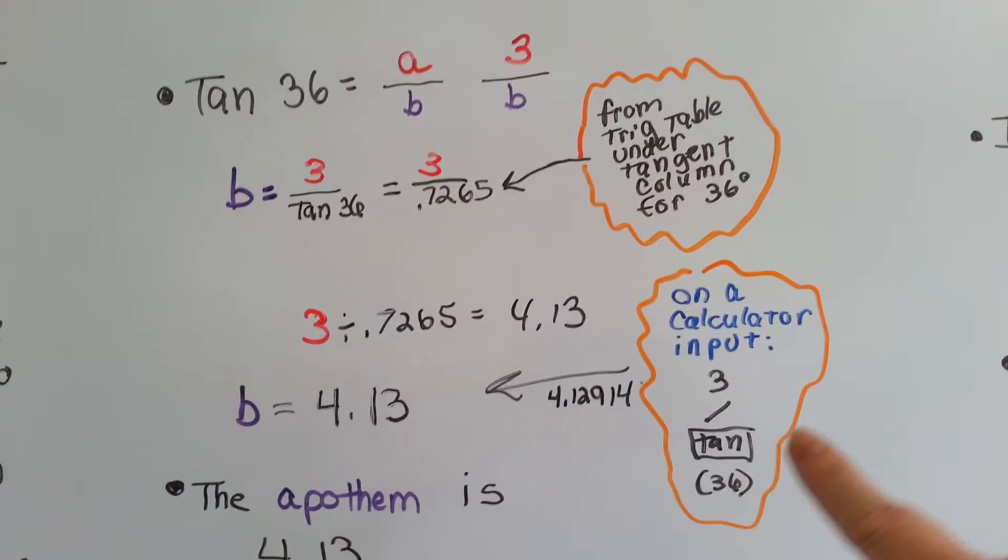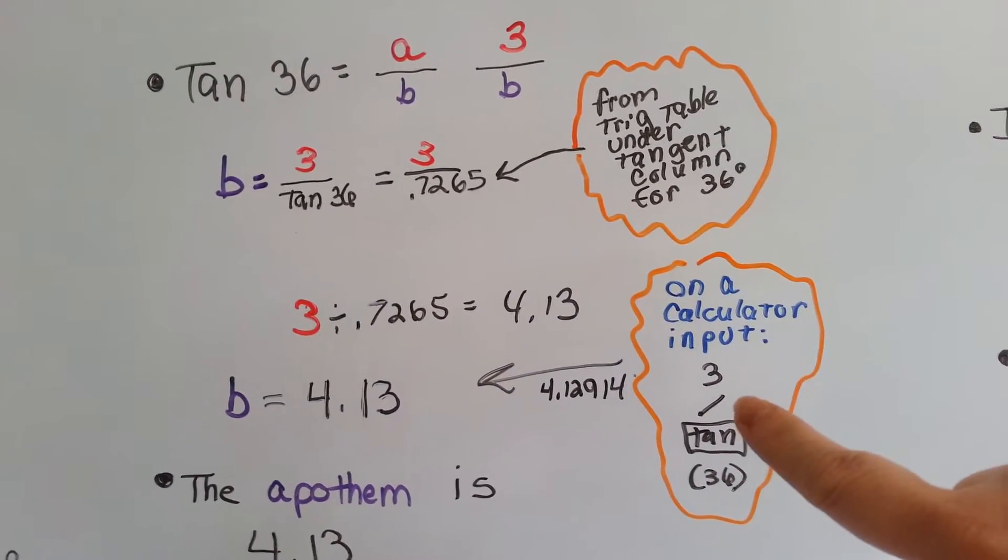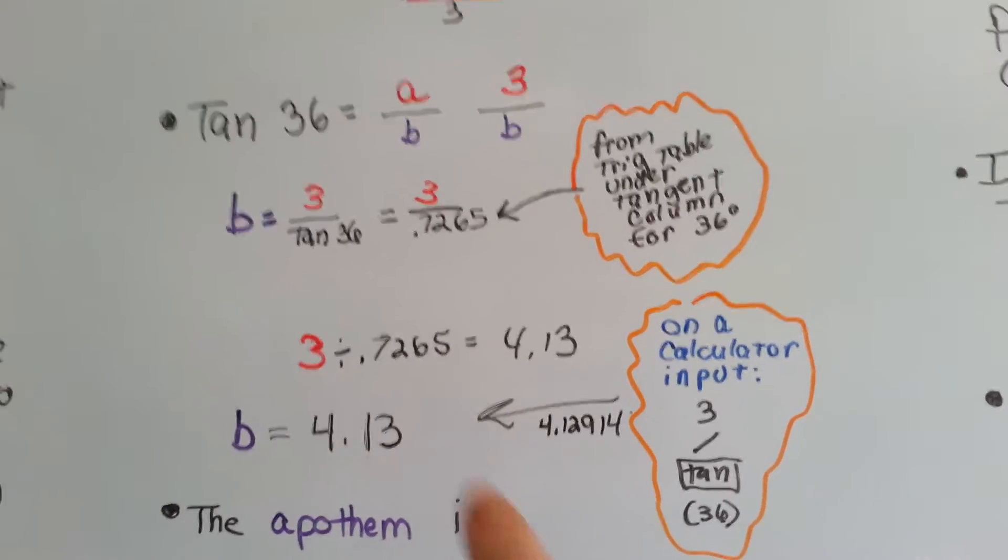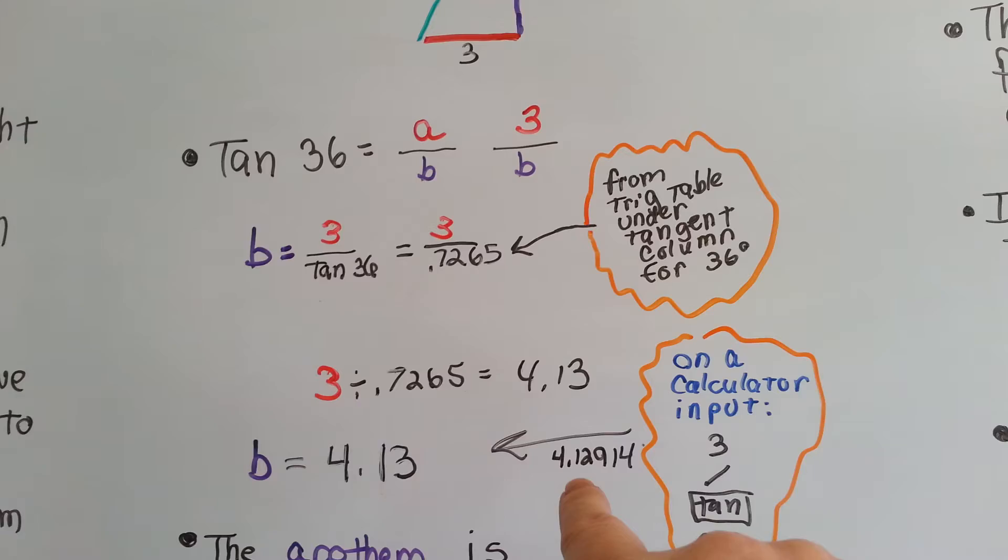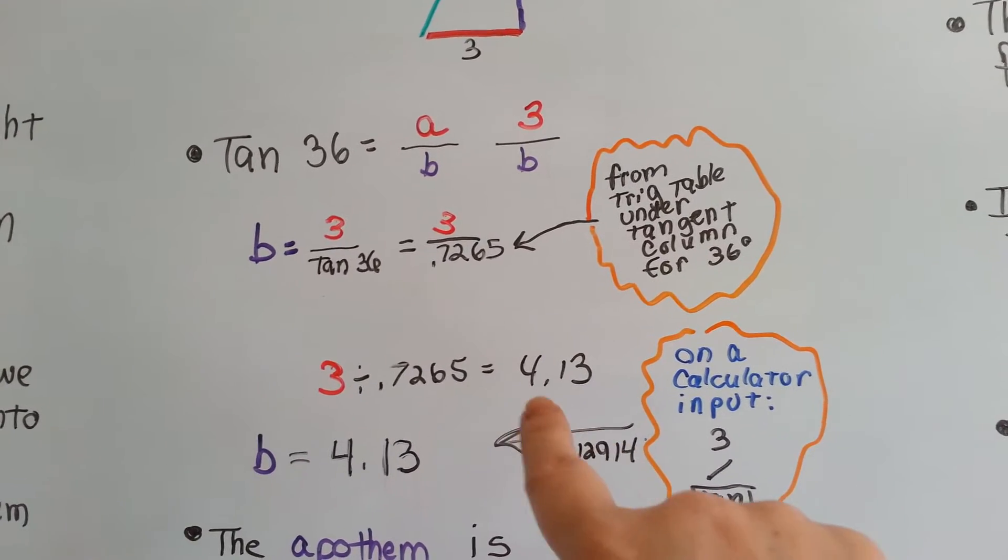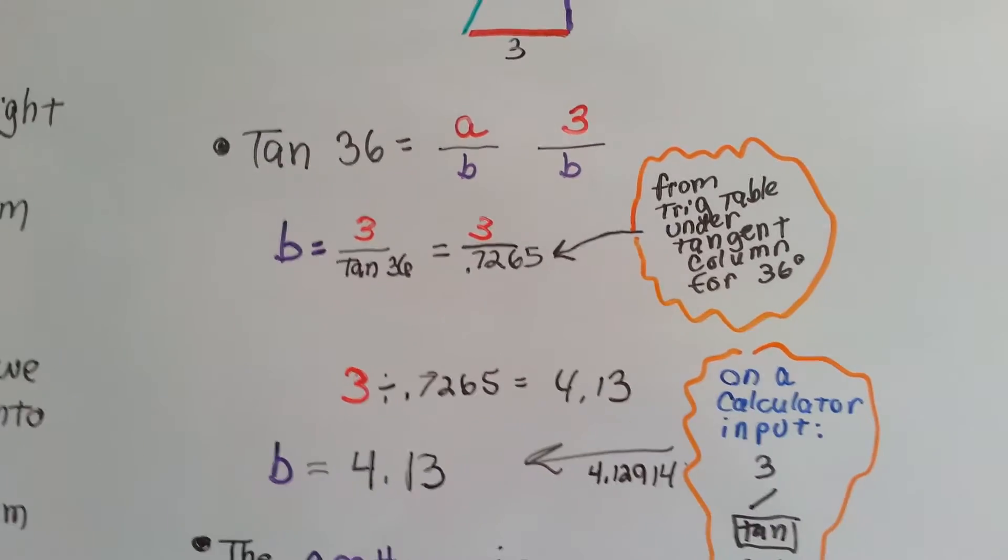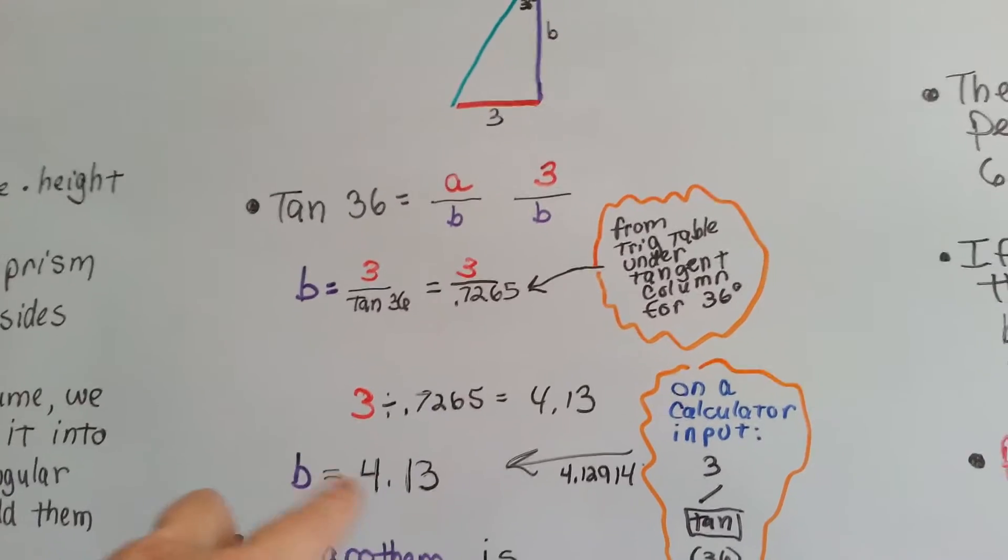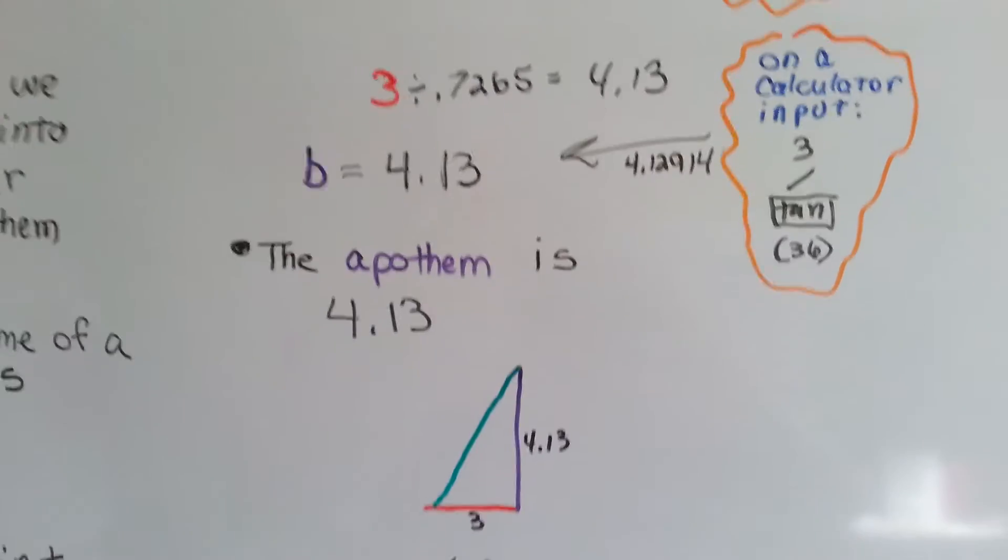If you have a calculator, input 3, then the division sign, then tangent button, and then put in 36, you'll get this. And when you round it off, it'll round off to the 4.13. You do your math, and we get that our apothem, our adjacent side, is 4.13.